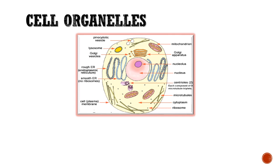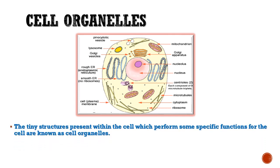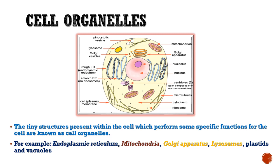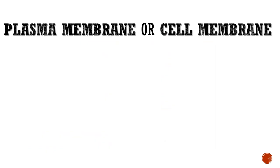So what are cell organelles? Cell organelles are tiny structures which are present within the cell and perform some specific functions for the cell. For example, endoplasmic reticulum, mitochondria, Golgi apparatus, lysosomes, plastids, and vacuoles.